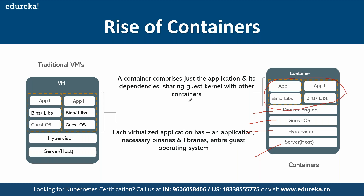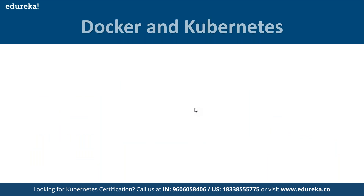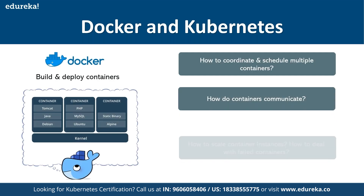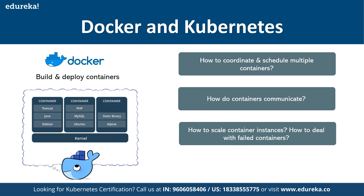Containers make applications lighter and easier to deploy. Prior to containerization, dedicated guest operating systems on each VM required a lot of storage, processing, and other resources. With containers, applications are more lightweight. Docker is used to build and deploy containers, while Kubernetes coordinates and schedules multiple containers, handles communication between them, scales container instances, and deals with failed containers.